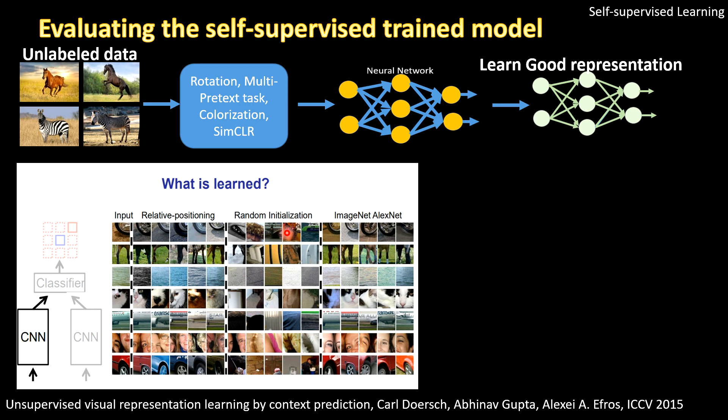But if it's not a good learned representation model, for example in case of random initialization, then some weird or non-matching images to the query would be retrieved.